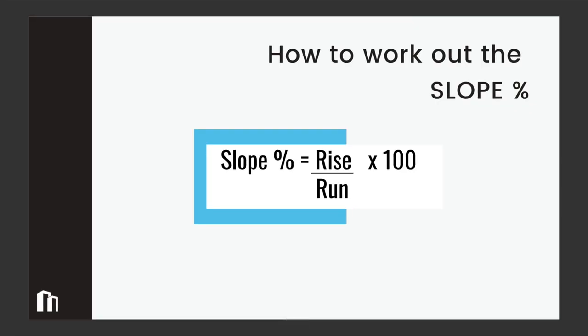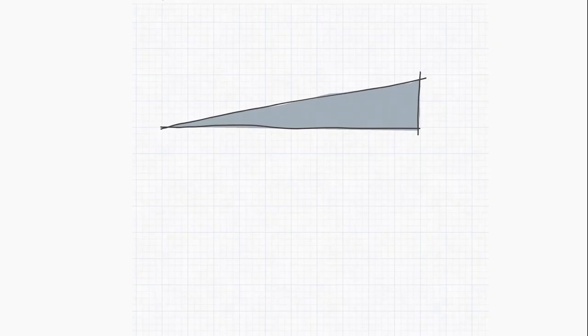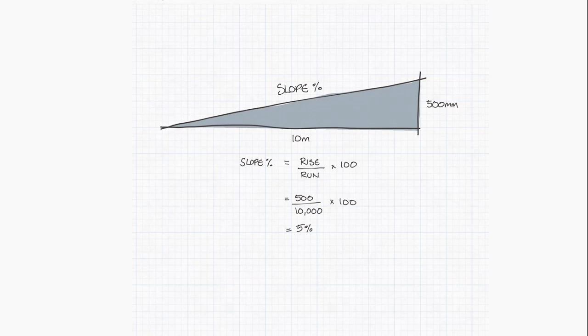Finally we are going to look at how to work out the slope percentage of a ramp or gradient. In this particular case we know that we have a 500 millimeter rise and we know we have a 10 meter run. So the slope percentage is equal to the rise divided by the run times 100. So in this case we are going to have a rise of 500 divided by 10,000 times 100. And this comes out at 5 which is 5%. So we know our slope gradient is 5%.